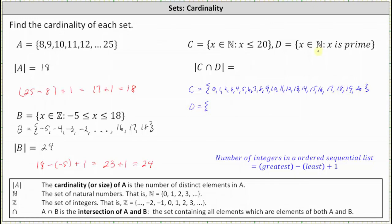Set D is the set of all natural numbers x such that x is prime. Remember, a prime number is greater than 1 and only has two factors: 1 and itself. So the first element in D is 2, followed by 3, and then 5, 7, 11, 13, 17, 19, 23, and so on. We can go ahead and stop here because remember we're looking for the intersection of C and D and the greatest element in C is 20.